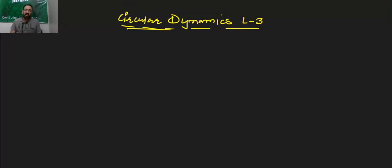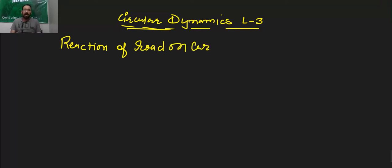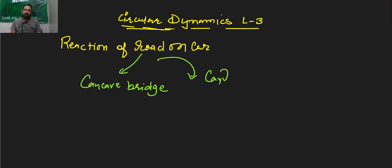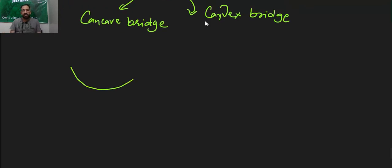Today we are going to discuss the reaction of road on a car. I am taking two roads: one is a concave bridge and another is a convex bridge. Let me draw the concave bridge here. There is a car on this concave bridge, and let this be the center of this particular concave bridge.